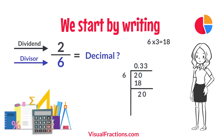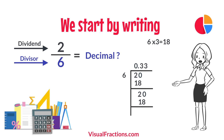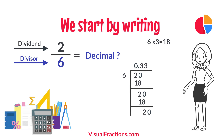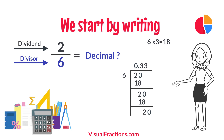This process repeats indefinitely, as each time we subtract 18 from 20, we are left with a remainder of 2. And when we bring down another 0, the cycle continues with 6 going into 20 three times.